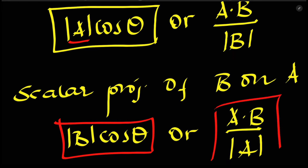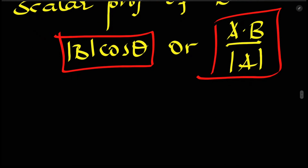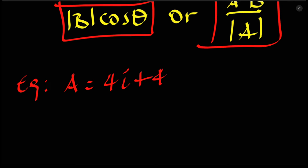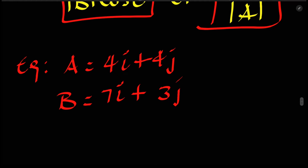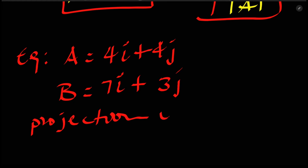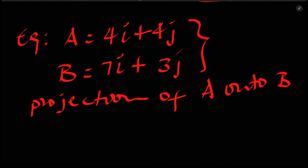For the scalar projection of B on A, it equals the magnitude of B times cosine of theta, or A dot B divided by the magnitude of A. Now let's do an example: vector A equals 4i plus 4j and vector B equals 7i plus 3j. Determine the projection of A onto B.